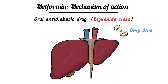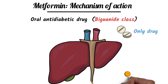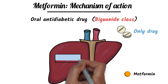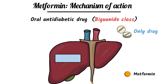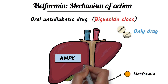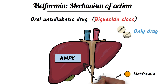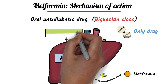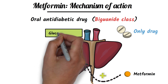It is still difficult to find a full explanation of the mechanism of action of metformin. However, the primary effect of metformin is to activate the enzyme adenosine monophosphate activated protein kinase, which is also called AMPK. Metformin activates the AMPK enzyme in the liver, which inhibits gluconeogenesis.